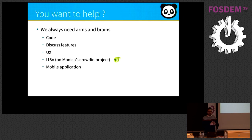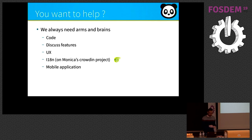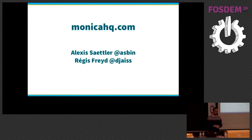If you want to help us, we always need help with the code and to discuss features on GitHub issues. We also want feedback about the interface. If you want to add a new locale or fix a translation, you can do it on the Crowdin project for Monica. And as I said, we need help with the mobile application. For more information, you can go to monikahq.com. Thank you for your attention — any questions?